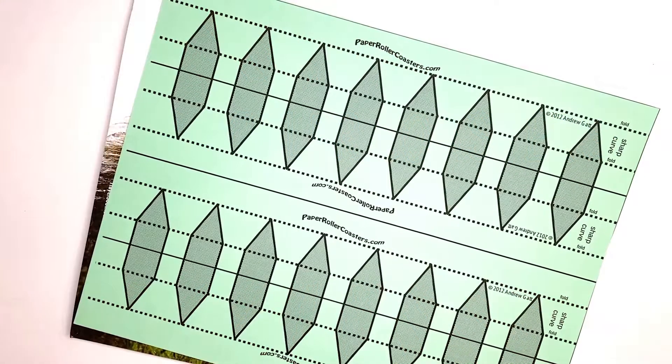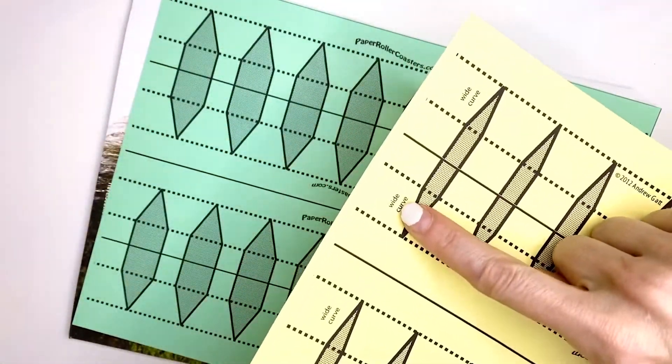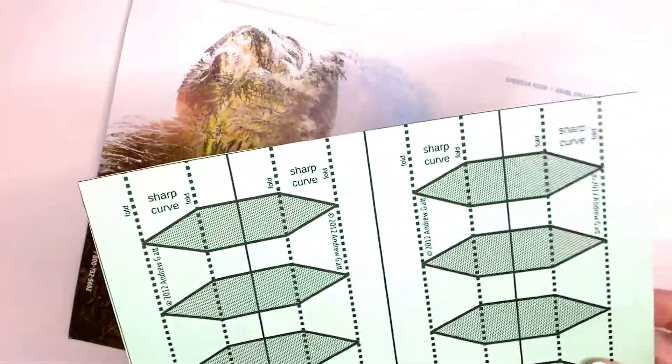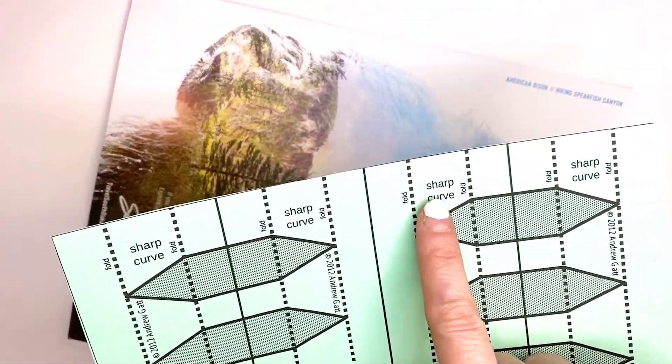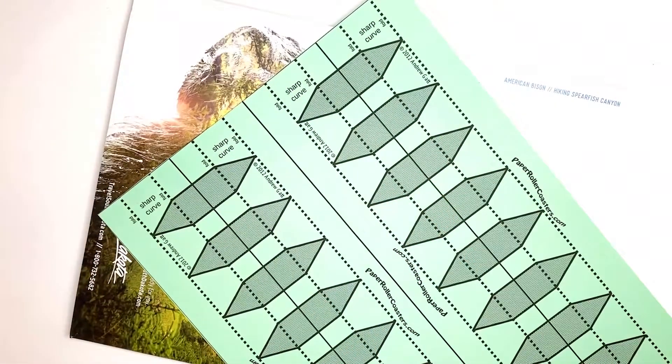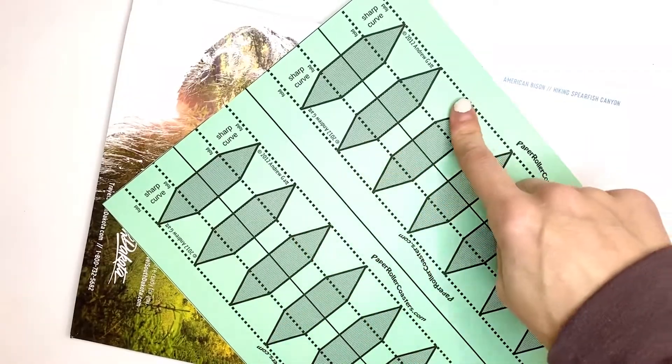In this video I will show you how to do the turn. There are two different types of turns: there's a wide curve and then there's a sharp curve. I'm going to show you how to do the sharp curve. There are four different sharp curves or turns per sheet of paper.